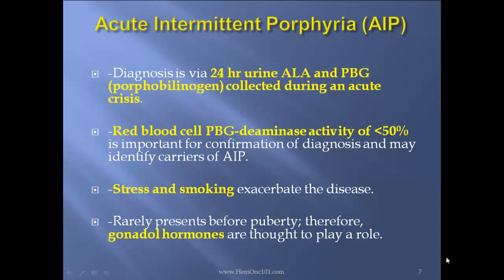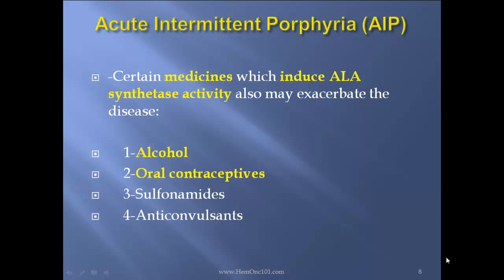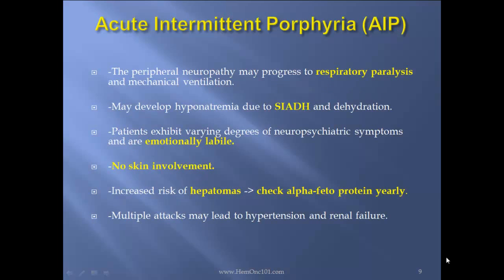Red blood cell PBG deaminase activity of less than 50% is important for confirmation of diagnosis and may identify carriers of AIP. Stress and smoking exacerbate the disease, and it rarely presents before puberty — therefore gonadal hormones are thought to play a role. Certain medicines which induce ALA synthase activity may also exacerbate the disease, including alcohol, oral contraceptives, sulfonamides, and anticonvulsants. The peripheral neuropathy may progress to respiratory paralysis requiring mechanical ventilation. Patients may develop hyponatremia due to SIADH and dehydration, and exhibit varying degrees of neuropsychiatric symptoms and emotional lability. There is no skin involvement. There is an increased risk of hepatomas, so check alpha-fetoprotein yearly.